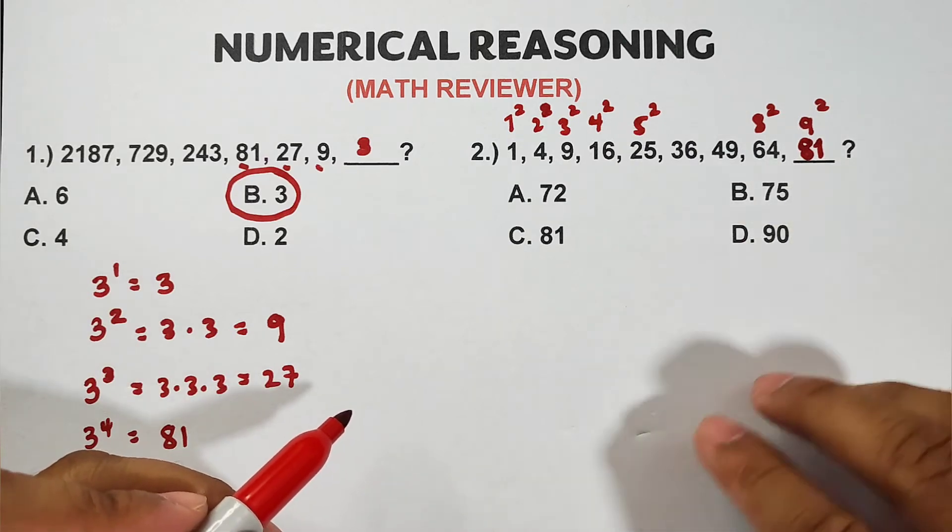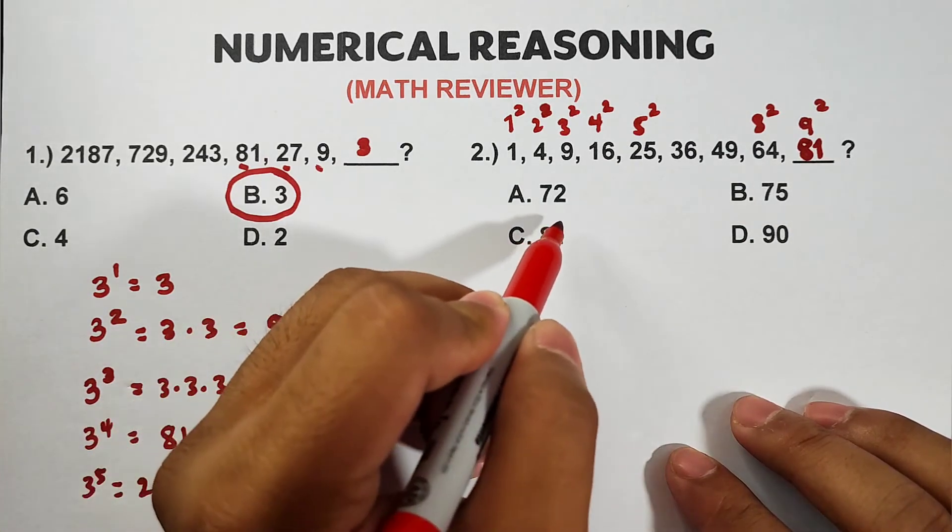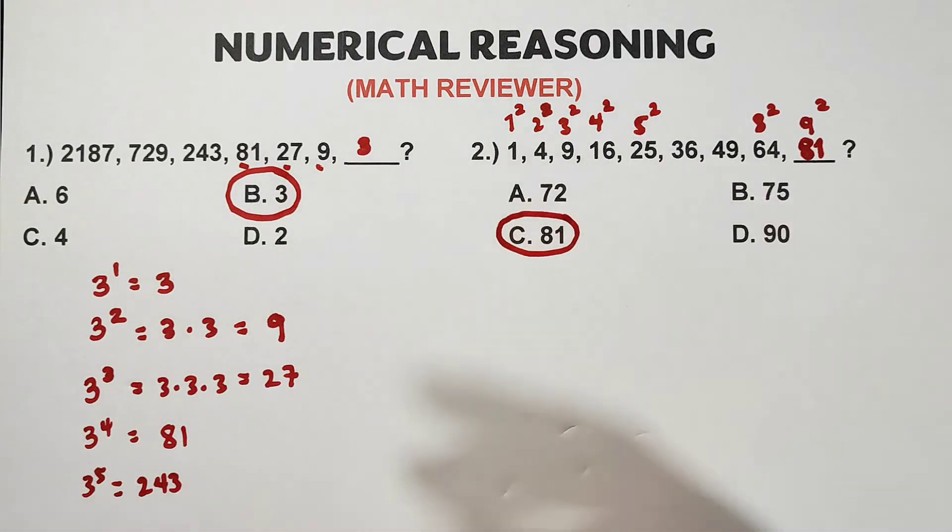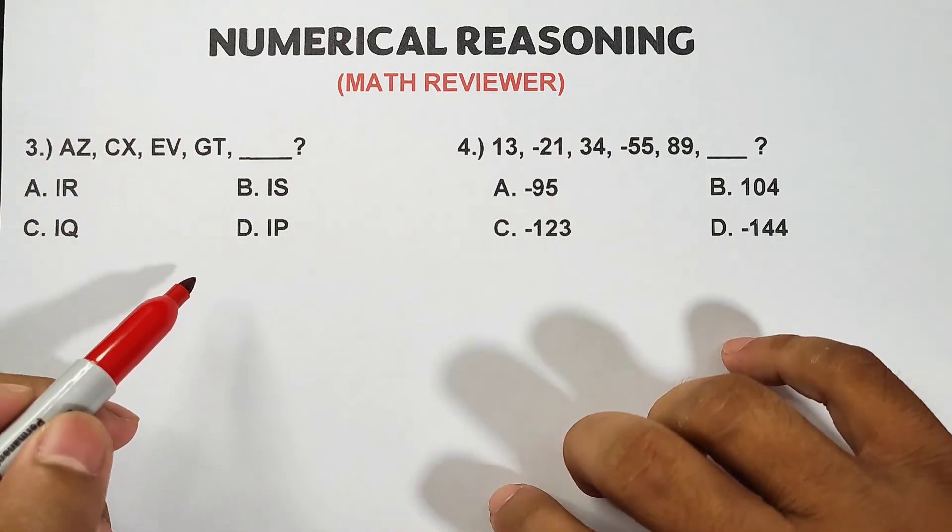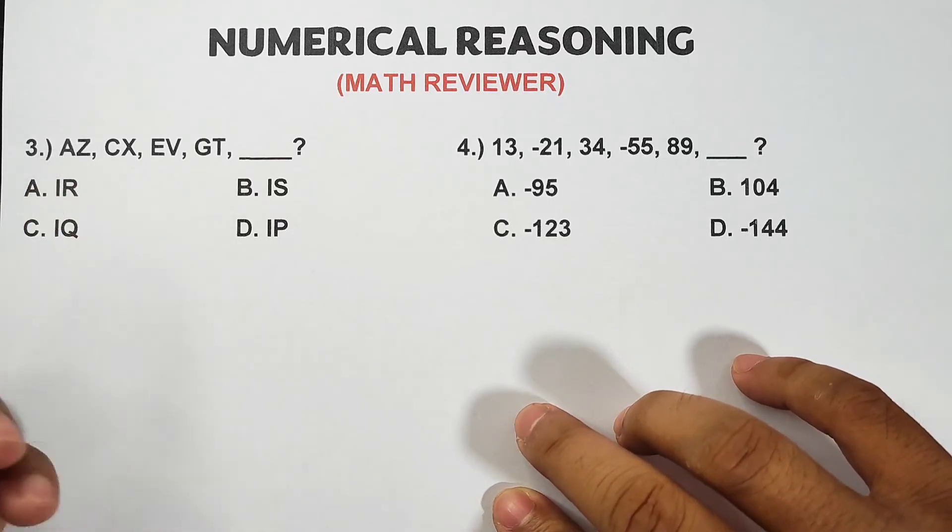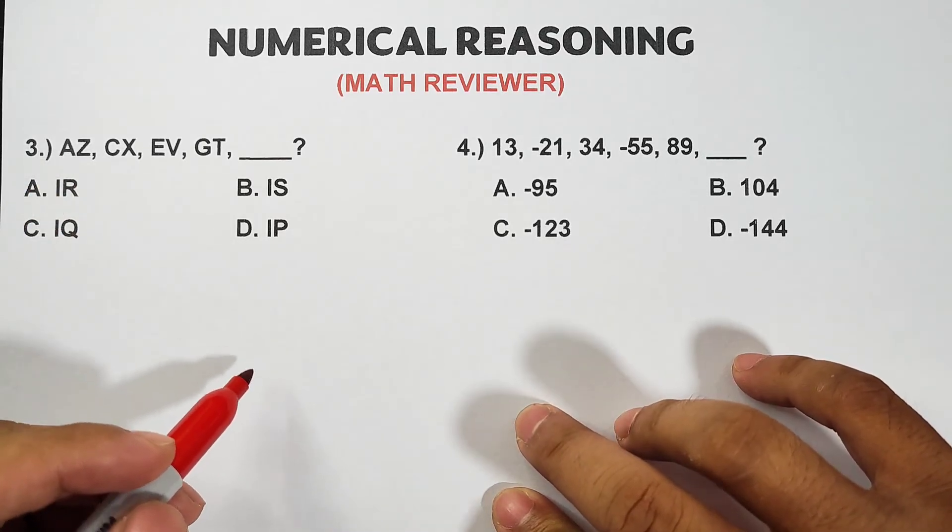Meaning the correct answer here for number 2 is 81. This number 2 is fairly easy because our numbers are perfect squares. That's why I told you, it's much better that you know our number patterns. Now let's move on with item number 3. I included here a letter series because these kinds appear in your numerical reasoning tests.